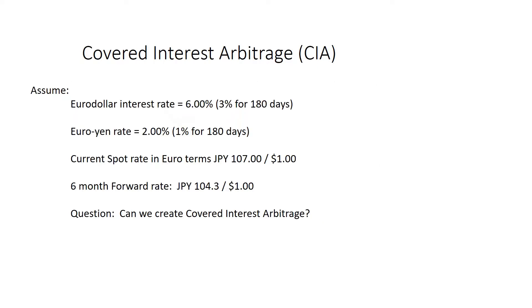I'm going to go through an example here and show you how this works. Let's assume that the dollar interest rate is 6% annualized — so that's really 3% over 180 days. And let's say the yen interest rate is 2%, which is 1% for 180 days. So we can see right away that the spread here is 2% — U.S. rates are higher than Japanese rates, 2% over 180 days.